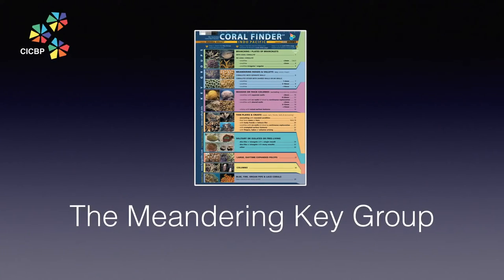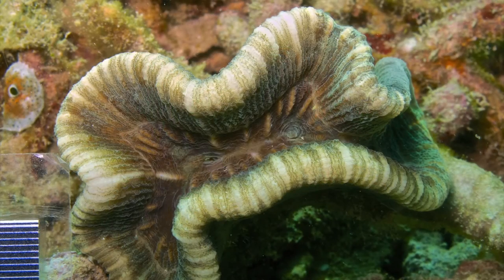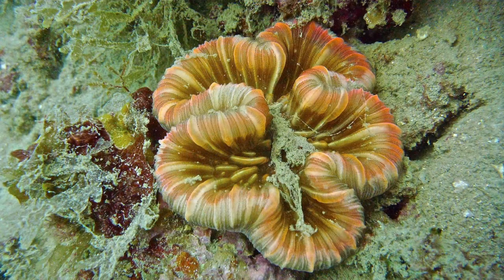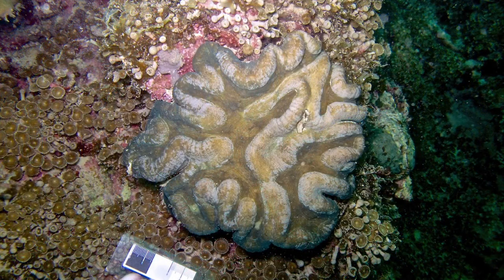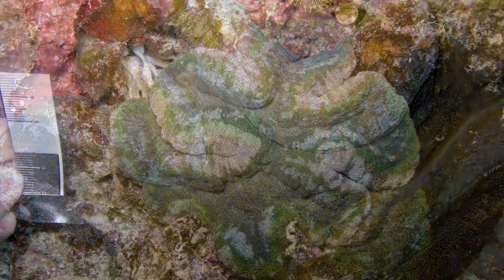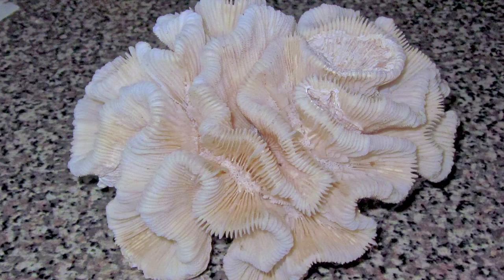Of course, we wouldn't be dealing with corals if there weren't any surprising examples, so let's explore some unusual meandering forms. Most reef corals form colonies, but some species only have one or a small number of polyps. As these corals grow, they contort around the edges to create the impression of separate walls. In some species, walls can be fused near the centre of the colony but separate near the edges. The Coral Finder treats these corals as having separate walls, even if sometimes it may appear contradictory. The technical term for corals with convoluted, separated walls is flabello meandroid.